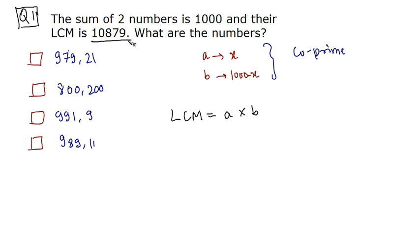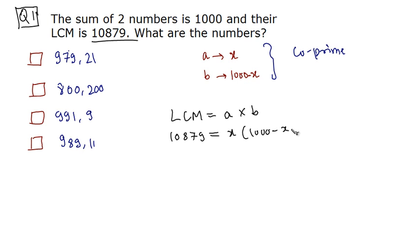We have been given the LCM which is 10879. We know the values of A and B which are X and 1000 minus X. So 10879 is equal to 1000X minus X squared.